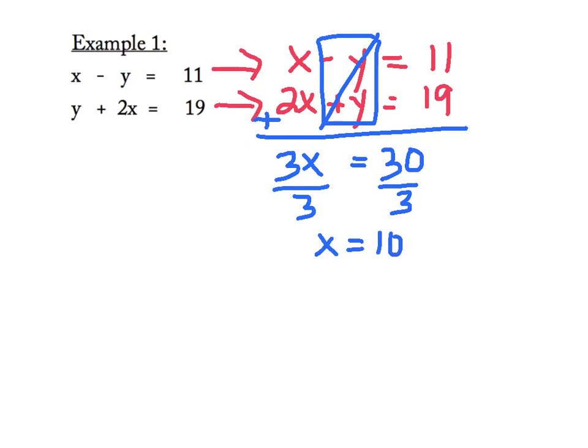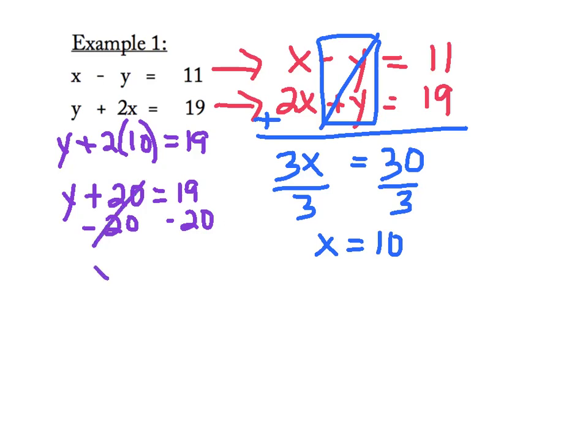Now that we know that x value, we're going to take that and substitute it into one of our other equations. I'm just going to pick the second equation, and fill in my value. y plus 2 times my x value is equal to 19. That gives me y plus 20 equals 19. I'm going to subtract 20 on both sides. My 20s on the left will cancel each other out, which leaves me with y equals negative 1.